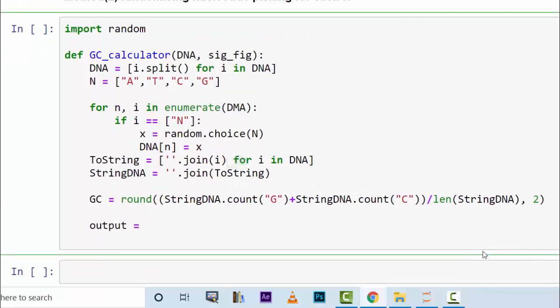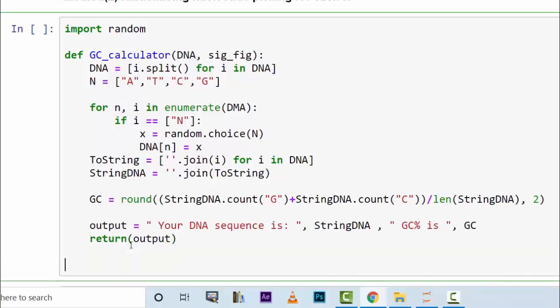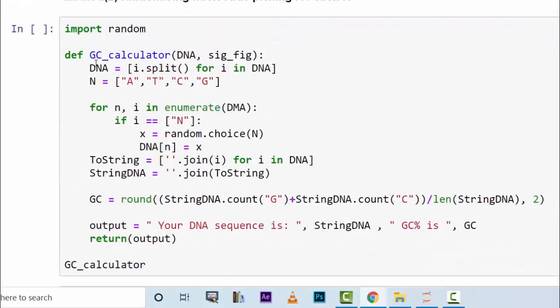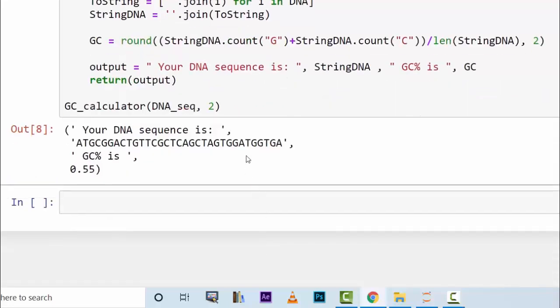So we can have an output or out, output variable, and this can say your DNA sequence is StringDNA basically. GC percentage is GC. Now you can return the output. This way you can feed the DNA sequence here. So this is the name of the variable that we have, DNA_seq. Now if you have a look, the same DNA length but if you have a look, the N nucleotides have been changed.